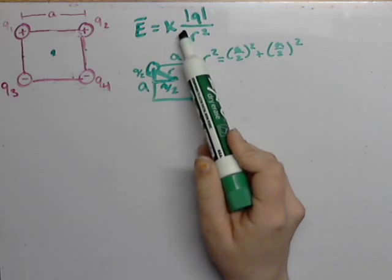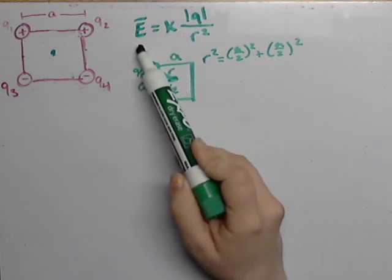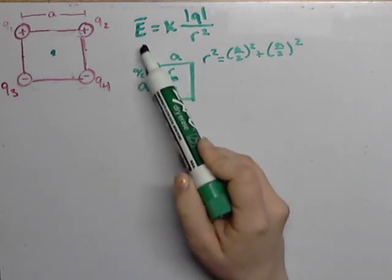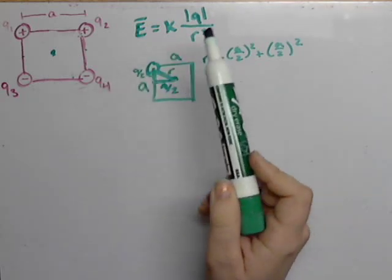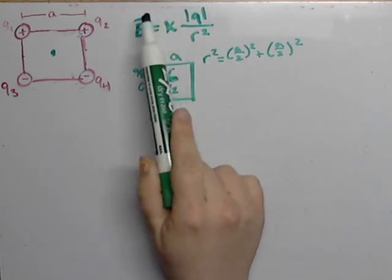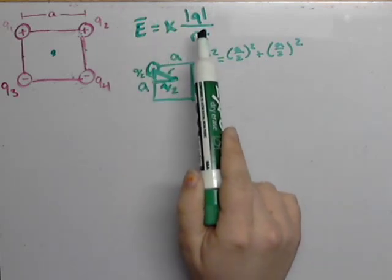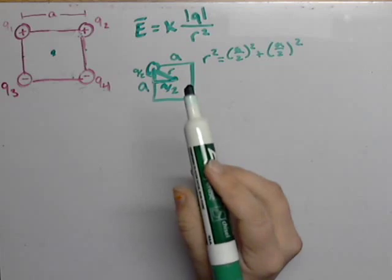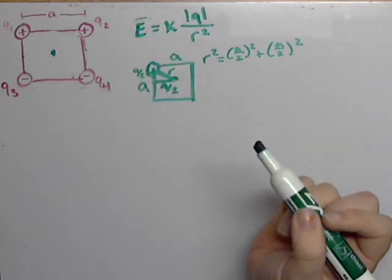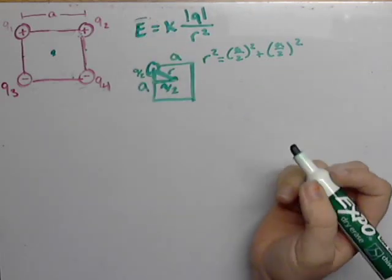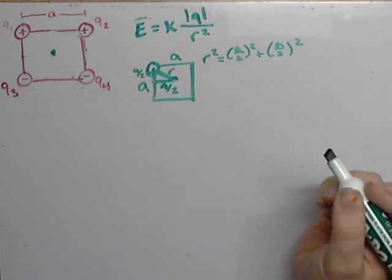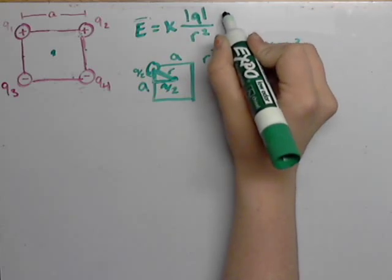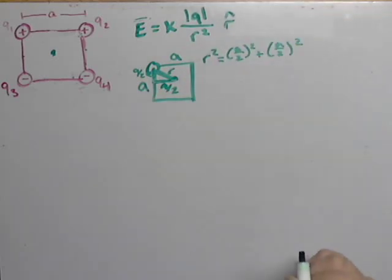Now we figured out that the Q value is the same at each point, and the R value is the same at each point. So now we deduce that the electric field, the magnitude of the electric field, is going to be the same at each point. This equation here is the equation for the magnitude. If we want to know the vector E in terms of labeling the magnitude and direction, we need to make sure that we're also taking into consideration the direction.